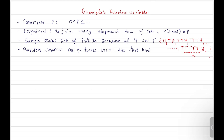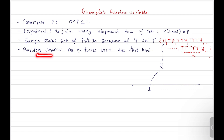Maybe we will do the experiment and on the very first toss we get the success — we get the head. So this random variable X will take this outcome as input and map it to the real number 1. Why 1? Because the number of tosses done for this particular outcome is only one toss. That is why the random variable is defined as the number of tosses until the first hit.